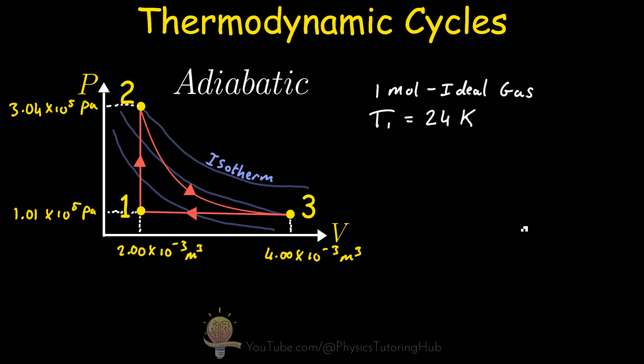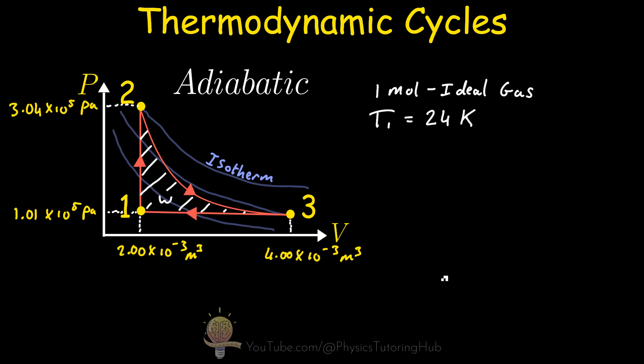We're working with one mole of ideal gas and its temperature at state one is 24 Kelvin. Notice that this cycle moves in a clockwise direction, meaning work done by the gas will be positive. We'll also work out how much heat was transferred to the ideal gas during this cycle. To find the enclosed area, we find the area under the adiabatic process and subtract the work done by the isobaric process, because the change in volume is negative.